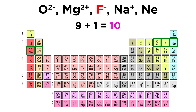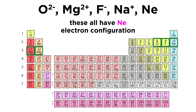Neutral fluorine has nine electrons, but F- has gained one electron, so the fluoride ion also has 10 electrons. For Na+, neutral sodium normally has 11 electrons, but it has lost one, so Na+ also has 10 electrons. And lastly, neon is neutral, so it just has the same number of electrons as its atomic number, which is 10. These are all isoelectronic species — they all have the same number of electrons, specifically the neon electron configuration.